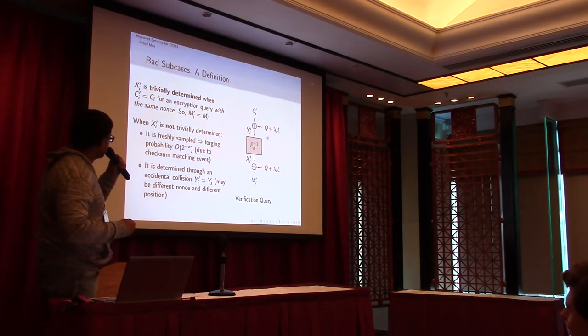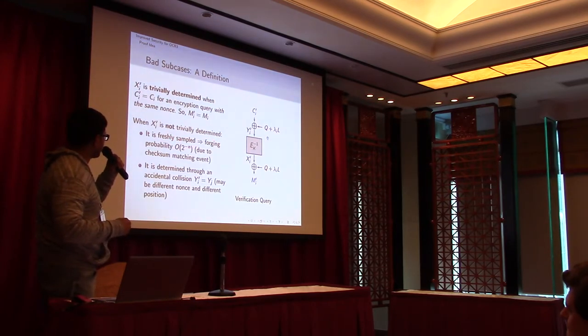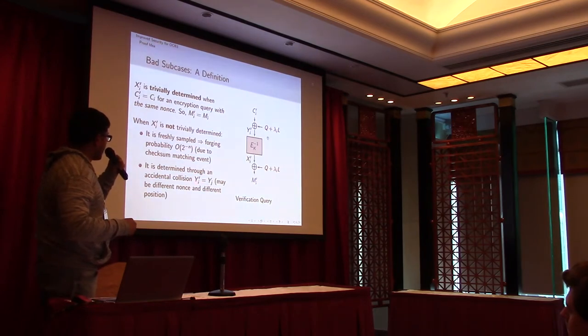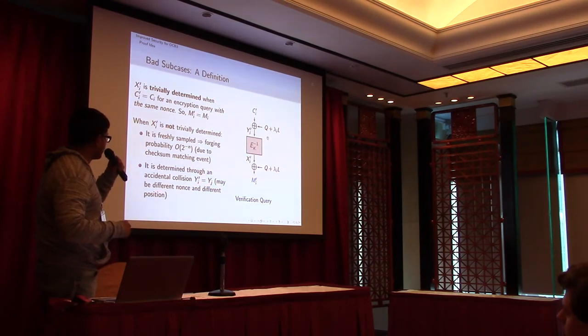And when it is not trivially determined, one choice is it is being freshly sampled. So in that case, this output of the block cipher is completely fresh, and only with probability 1 by 2^n the bad event can happen, because we need to match that checksum. Another option is it can get determined through an accidental collision where y_i_prime equals y_j for i and j with different details, maybe we have different nonces or different positions.